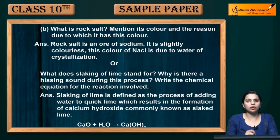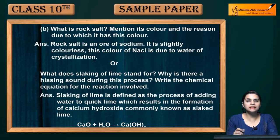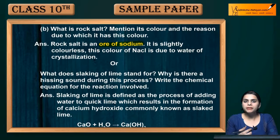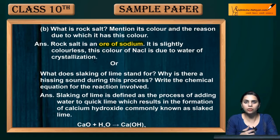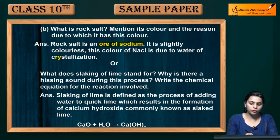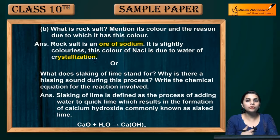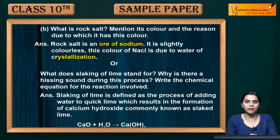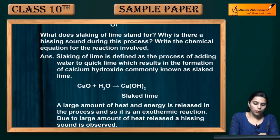Next: what is rock salt? Mention its color and the reason for it. Rock salt is an ore of sodium — meaning it is the primary source from which we extract sodium. Rock salt is slightly colorless. The color of NaCl in rock salt is due to water of crystallization, as water molecules are present within the crystal structure.